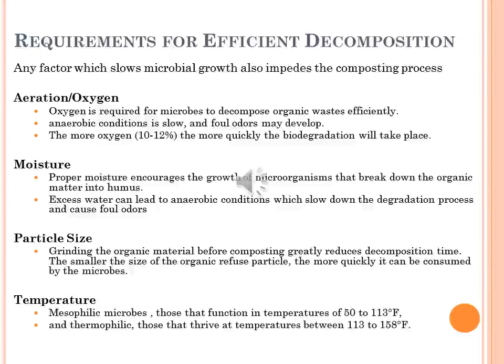Temperature: the temperature of the compost pile is very important to the biological activity taking place. The microbes that make up the bulk of the decomposition process fall into two categories: mesophilic — those that live and function at temperatures of 50–113°F — and thermophilic — those that live at temperatures between 113–158°F. A well-mixed, working compost pile will heat to temperatures between 110°F and 150°F as microbes feed on organic material. These high temperatures help destroy weed seeds and disease organisms within the pile.